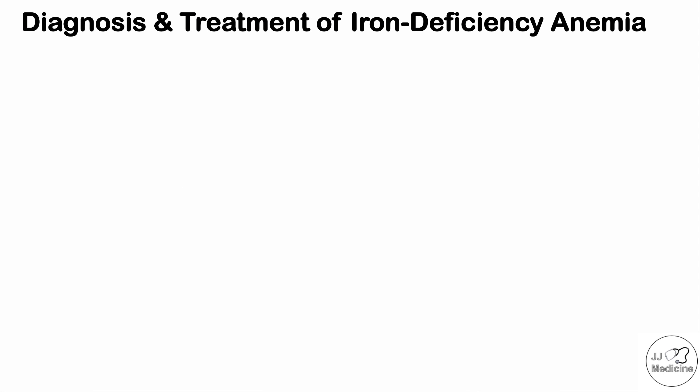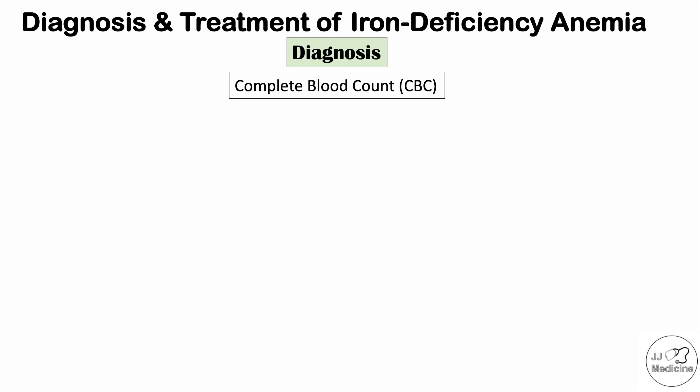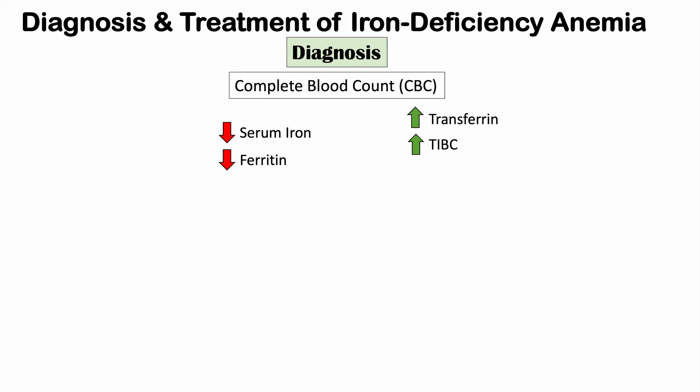Diagnosis is often made by taking blood and performing a complete blood count (CBC). Findings include low serum iron, low ferritin, high transferrin (which is unbound to iron, signifying low iron), and high TIBC (total iron binding capacity — because there's low iron, the body has more capacity to bind it). A high red cell distribution width is also commonly seen. In anemia of chronic disease, ferritin will be normal or elevated, distinguishing it from iron deficiency anemia.